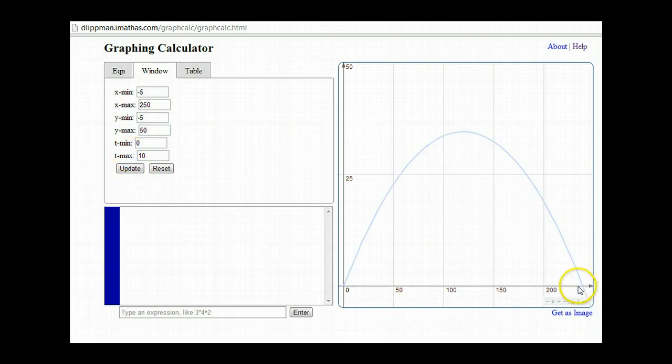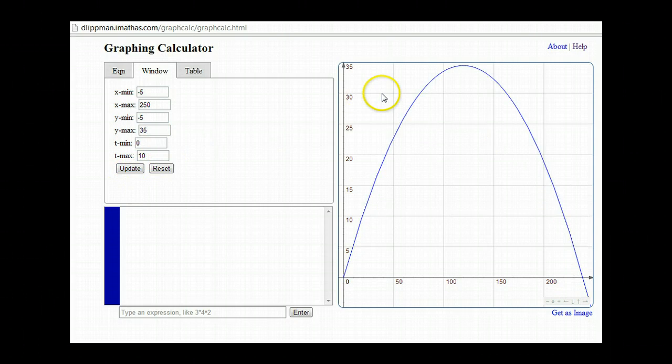Okay so this is a pretty good window. Notice I can now see where the projectile hits the ground, that's good. I can see my maximum. You might want to bring your maximum y down a little bit, I'll bring it down to say 35 and see what happens there. Okay so yeah I can see the top still so that's good.